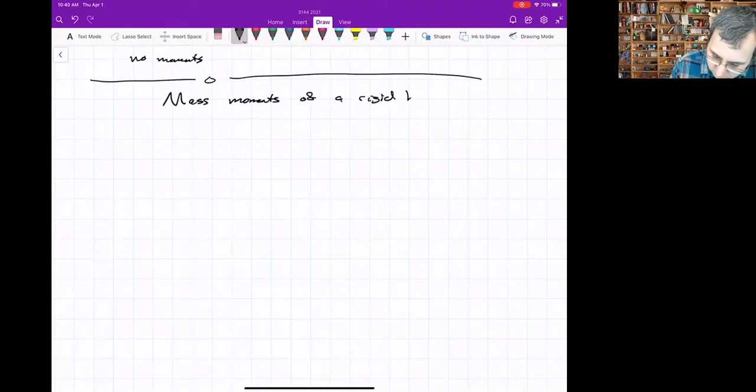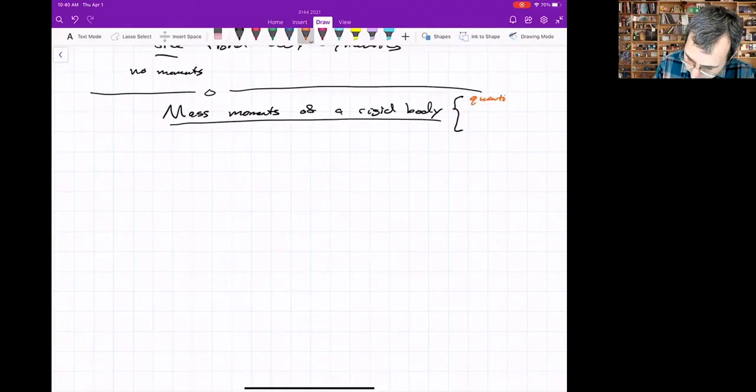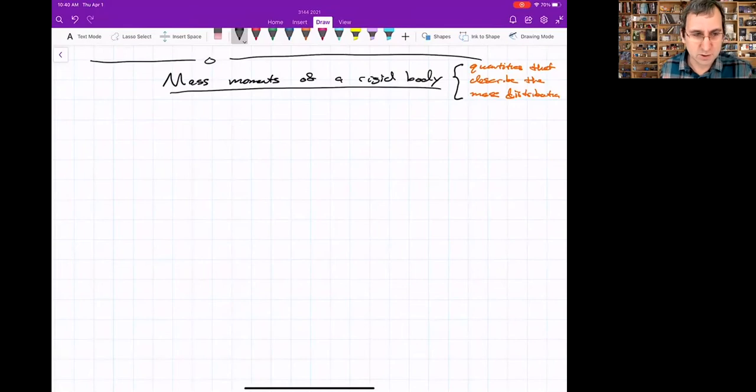These are the mass moments of a rigid body summarized. These are all quantities that describe the mass distribution. We could phrase it in terms of questions, answers, and what the mathematical object is that gives that answer.